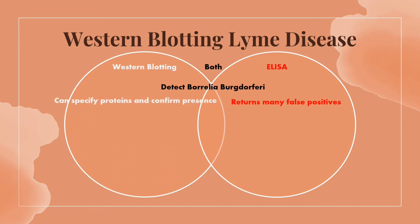The Western blot is not the primary method of detection, as it is time-consuming and difficult to use. ELISA, on the other hand, is relatively fast and gives us much more information, as it is not constrained to one antibody like the Western blot is. Regardless, these methods are used in conjunction to diagnose Lyme disease.